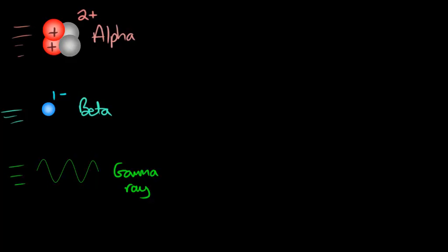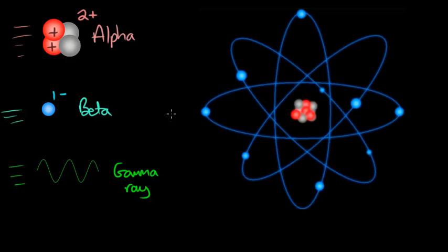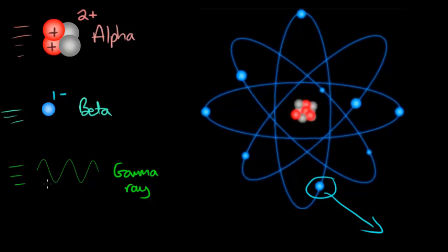What is ionization? All three can ionize atoms of material by knocking an electron out of the atom. For example, a gamma ray will collide with an atom and give an electron enough energy to escape the pull of the nucleus, making the atom into a charged atom called an ion. This process is called ionization.